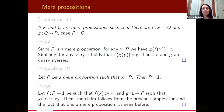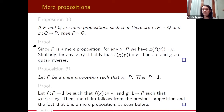Let us see properties of mere propositions. If P and Q are two mere propositions, and there is a map f from P to Q and another map g from Q to P, then P and Q are equivalent. Since P is a mere proposition, for all x in P, g(f(x)) = x because all terms in P are equal. Similarly, f(g(y)) = y for all y in Q. So f and g are quasi-inverses, and P and Q are equivalent.